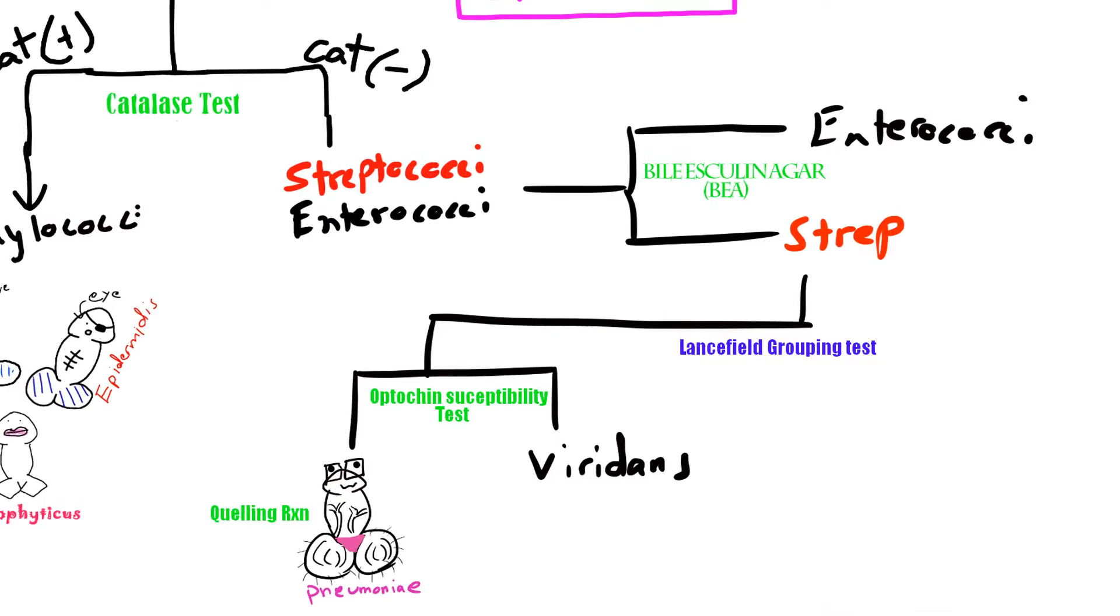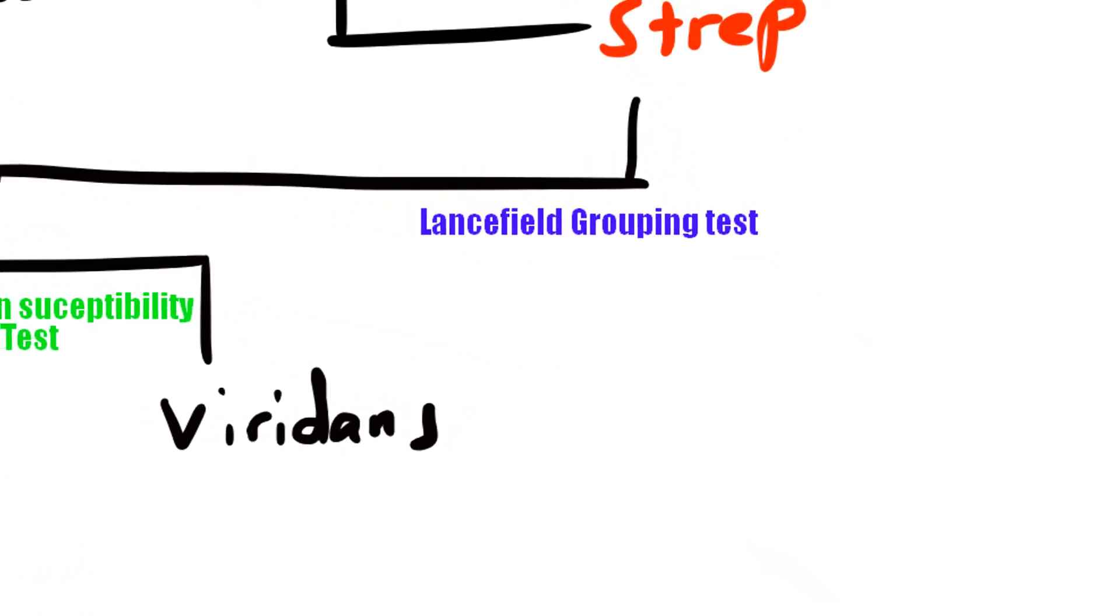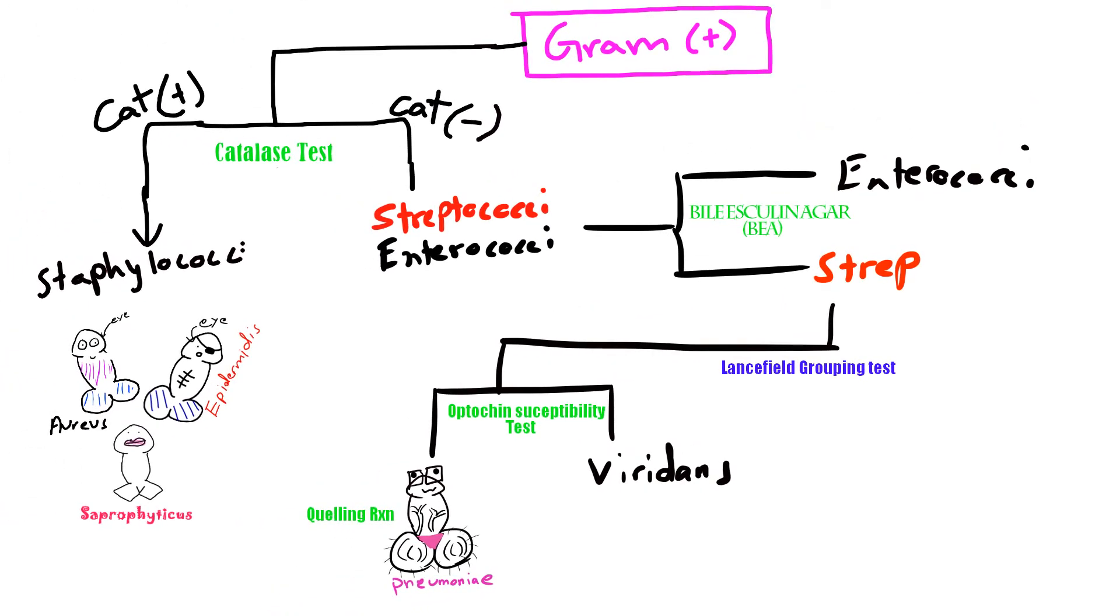There's also another test called the Lancefield grouping test, which groups bacteria from a category of A through S based on the type of carbohydrate composition of the bacterial antigens that are found on their cell walls. So for streptococci pneumoniae, it actually has no Lancefield antigens, so it doesn't even get grouped.